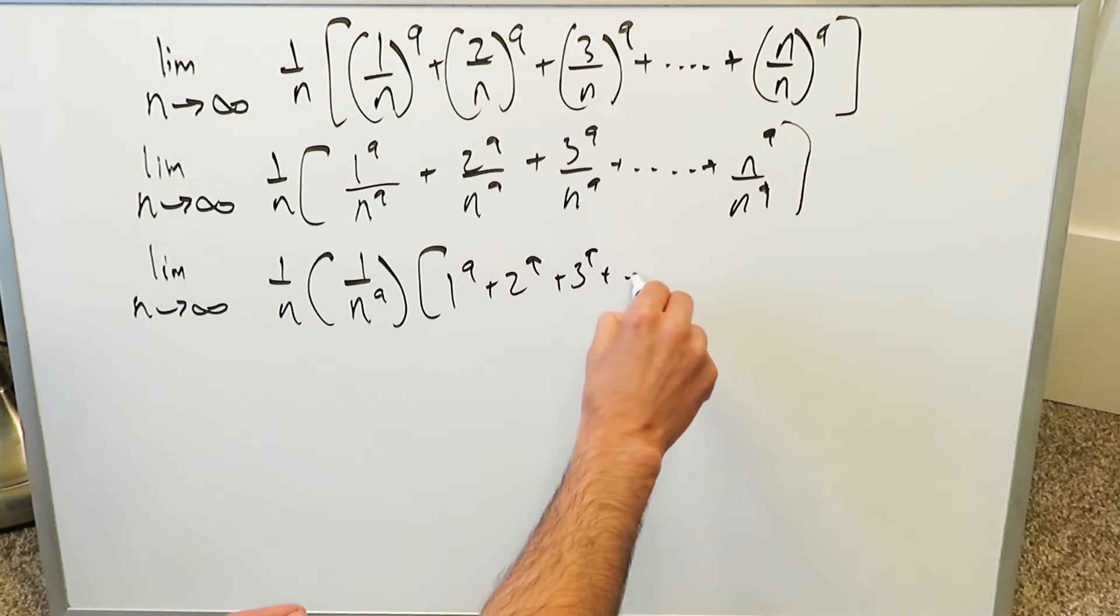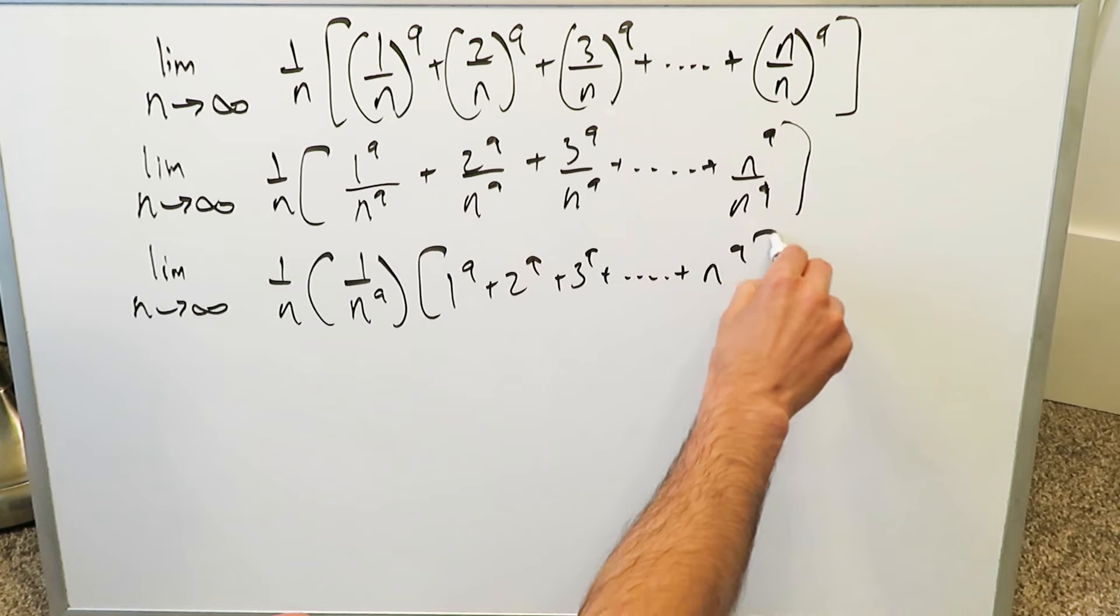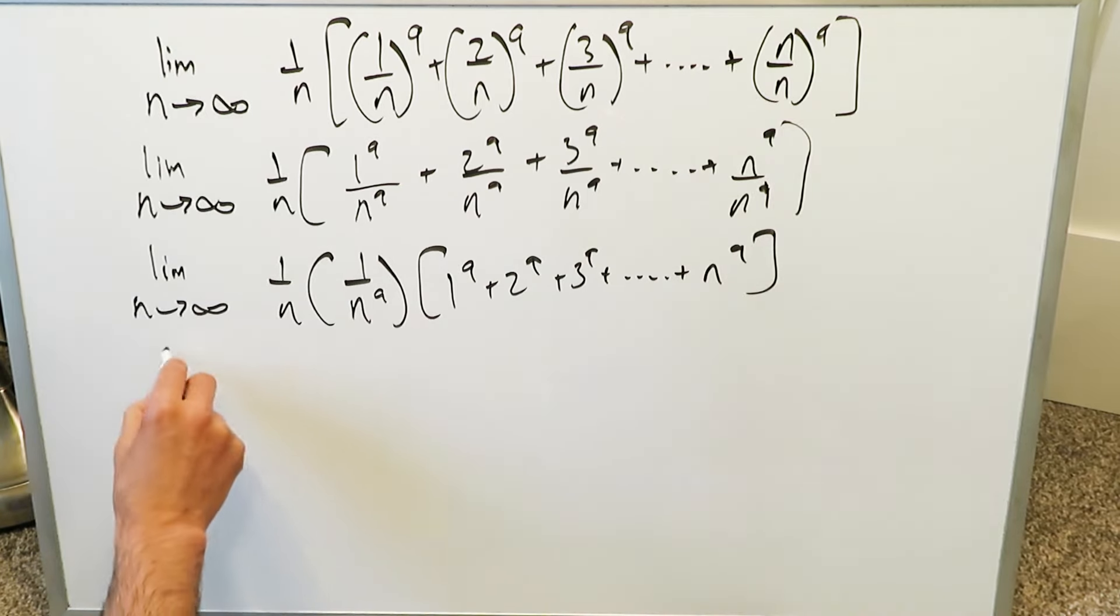As you see everything is turning out in a good way. When you're looking at this you can combine this and you can consolidate that to 1 over n to the power of 10.